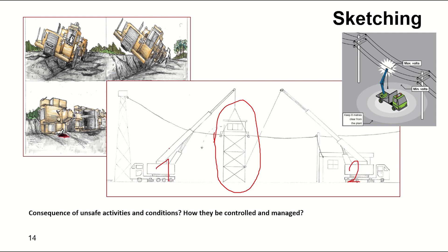Two different cranes are working to dismantle or move this small tower, and there is a power line nearby. The sketch shows what kind of risks are associated with this operation. You can also see a trench where the driver cannot manage adequately, and then an incident occurs. This sketch is also used for instructing the driver — you can see different zones or buffer areas showing the required clearances and headroom from the power line. This shows how important and useful sketching is.